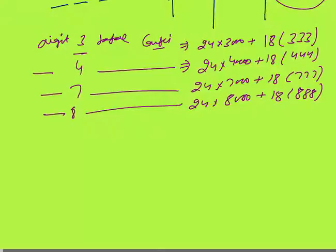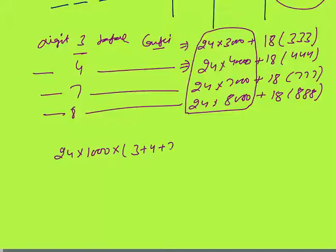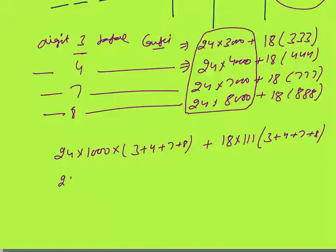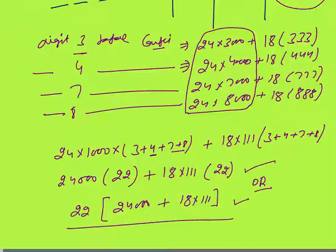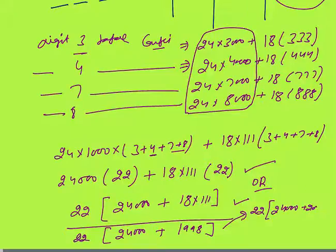Adding all contributions: take 24 × 1000 common from the thousands-place terms — we get 24 × 1000 × (3+4+7+8) = 24000 × 22. From the remaining terms, 111 is common — 18 × 111 × (3+4+7+8) = 18 × 111 × 22. So total = 22 × (24000 + 18 × 111).